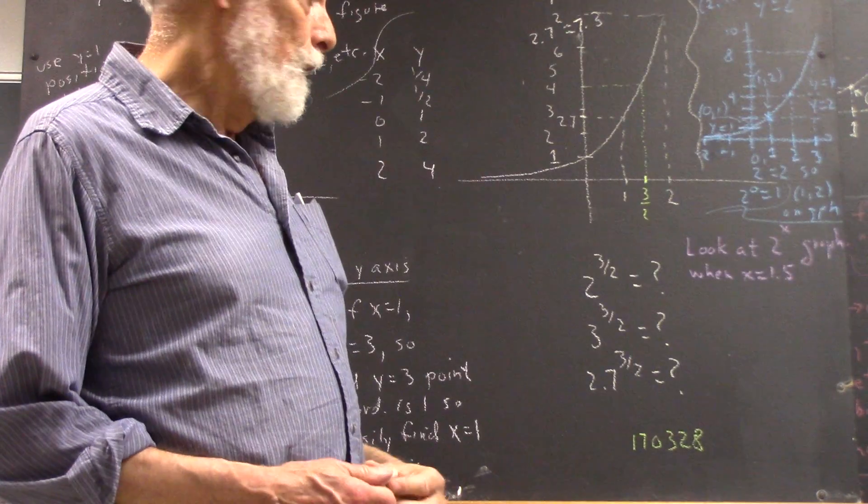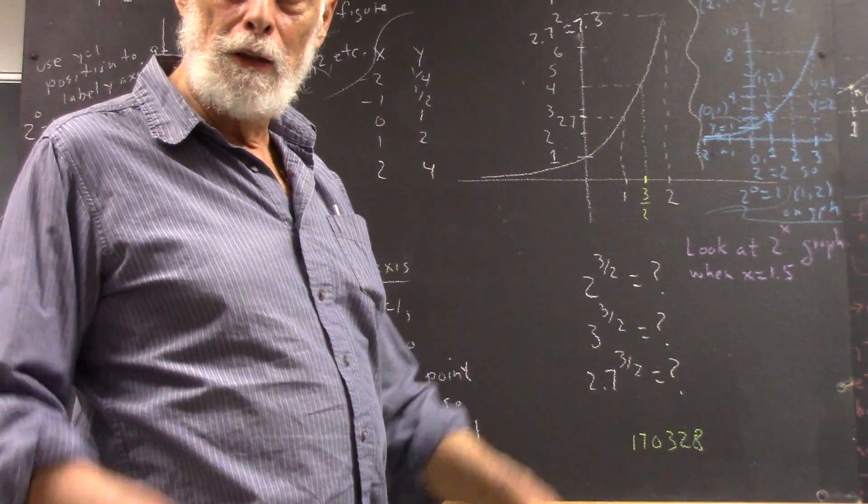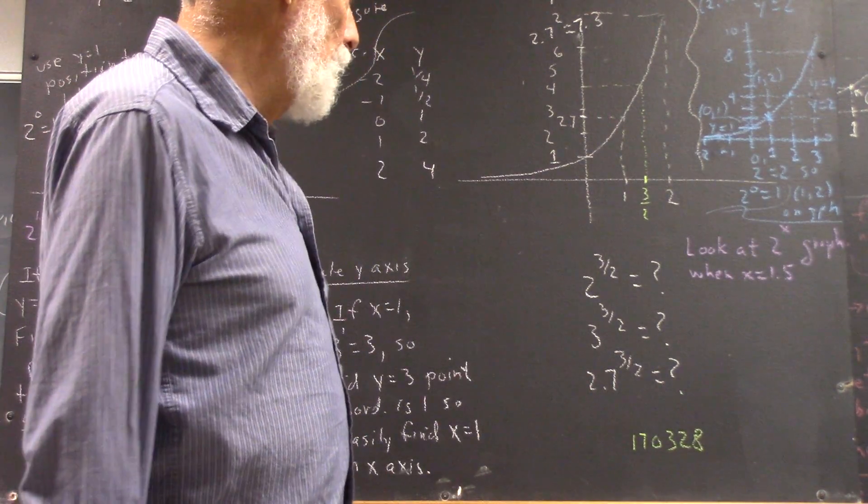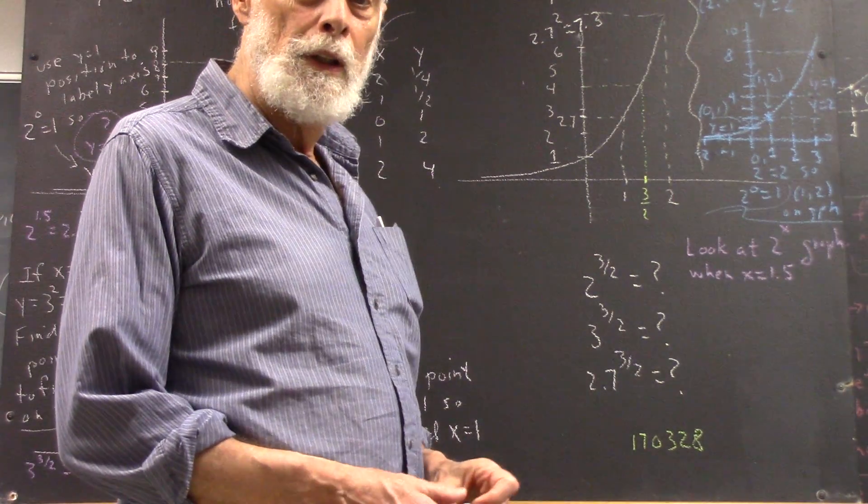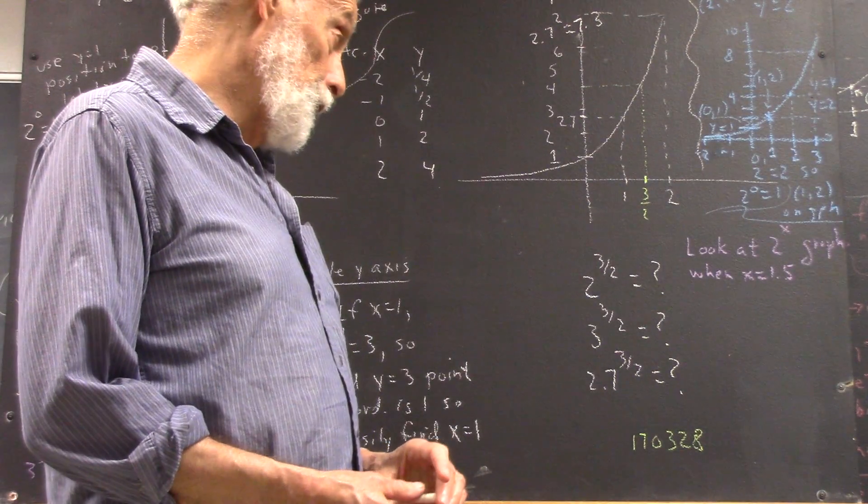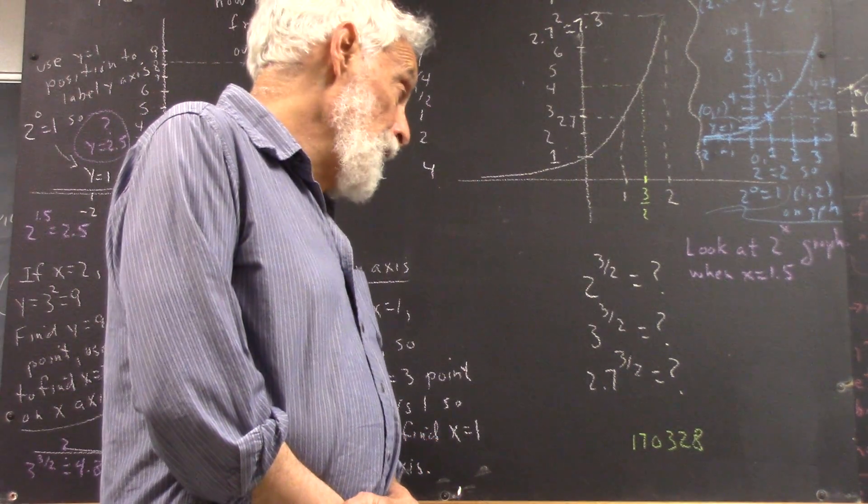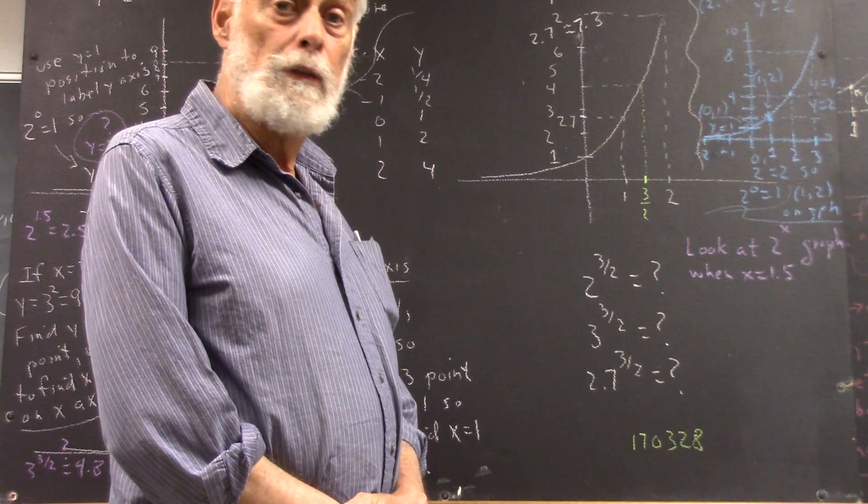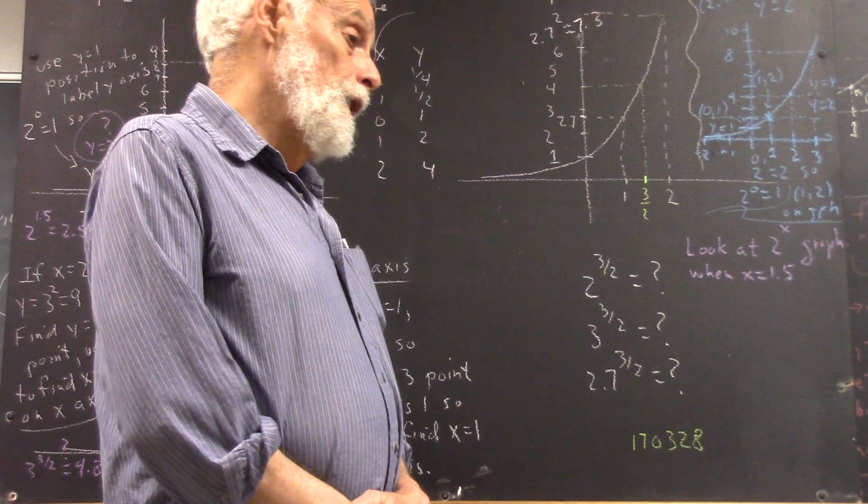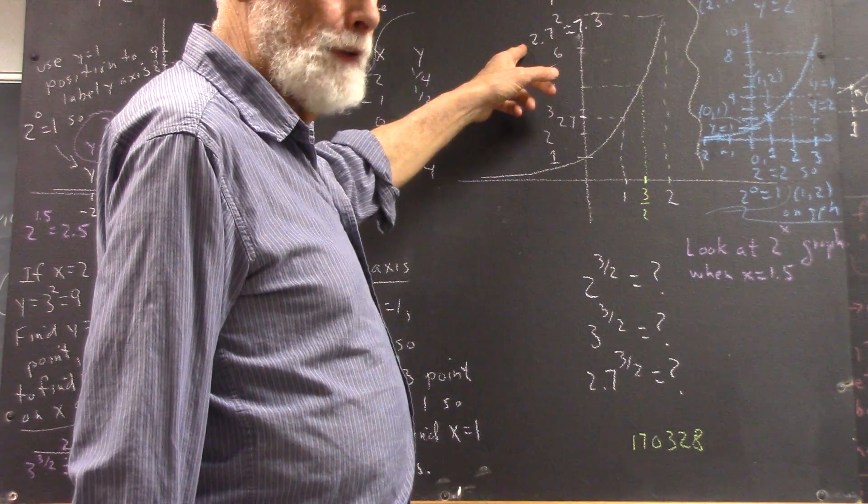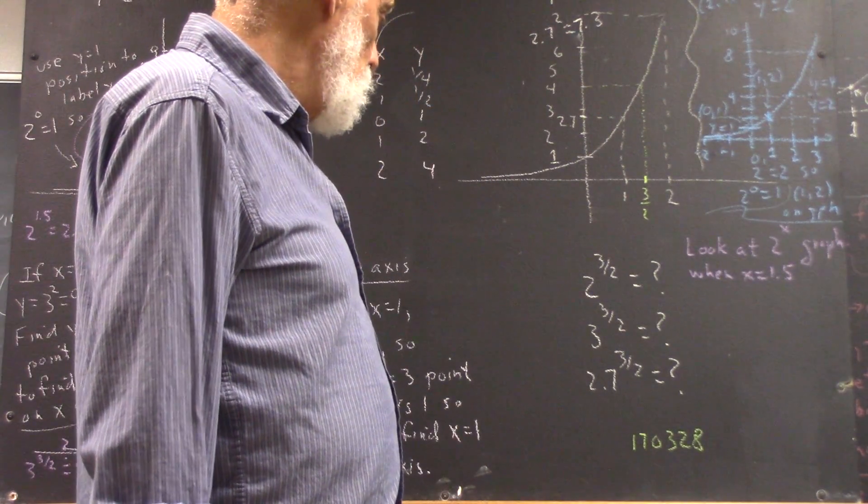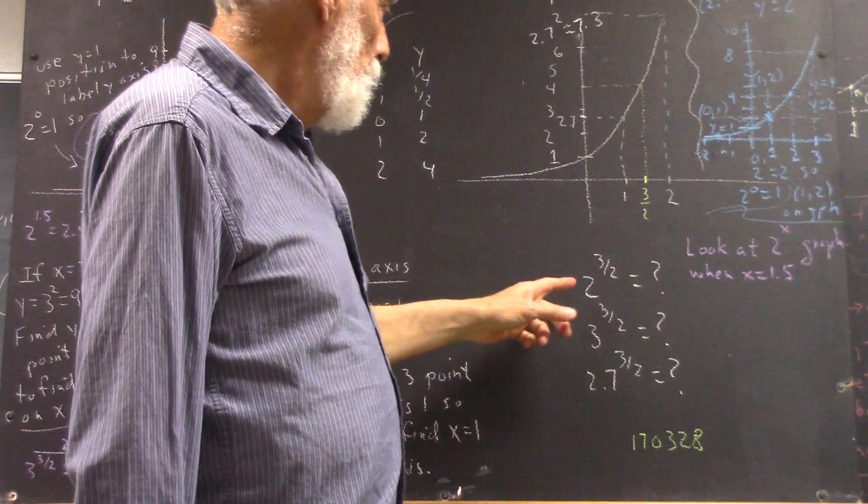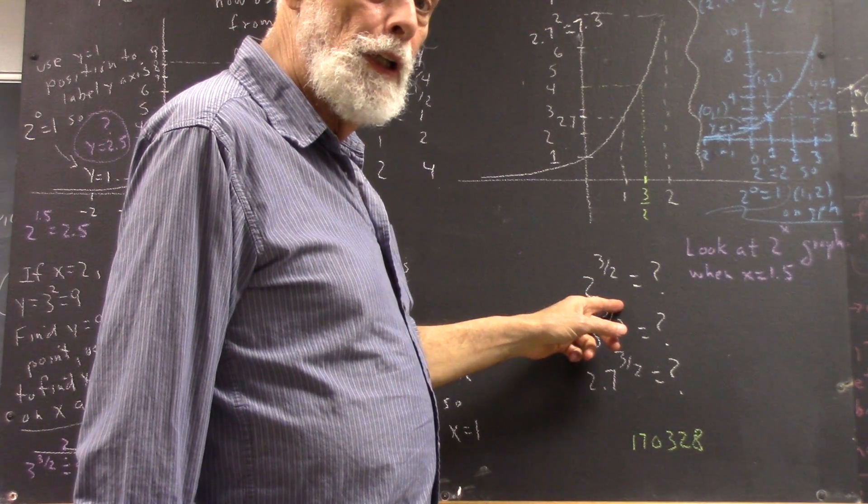Now you know that we don't bring our calculators out in class unless we have specific instructions to do so. We don't do anything by calculator until it comes time to do things by a calculator. Nothing we've done here requires a calculator. You could even square 2.7 without a calculator, but I didn't want you to have to do that, so I told you.